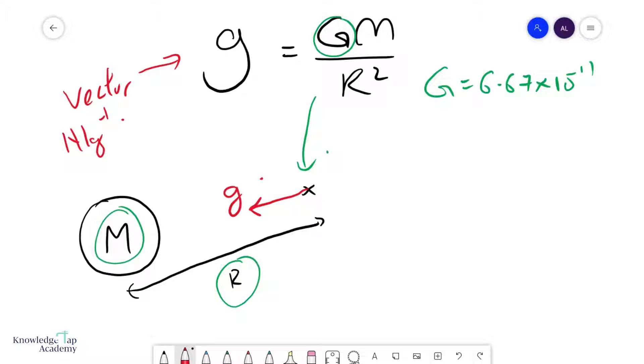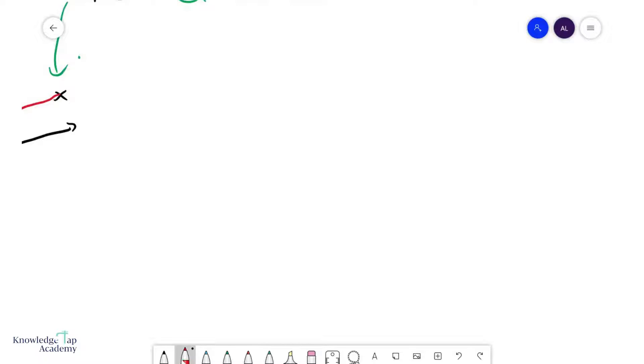For example, we might be able to relate to this now. We've been very comfortable with the fact that g on the surface of the Earth is 9.81.